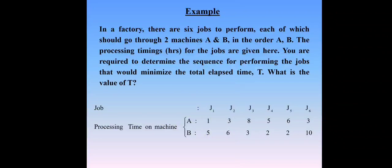Let's see an example. In a factory, there are six jobs to perform, each of which should go through two machines, capital A and B, in the order A, B. The processing time for the jobs are given here. You are required to determine the sequence for performing the jobs that would minimize the total elapsed time.